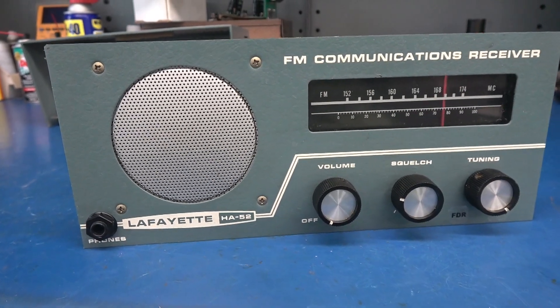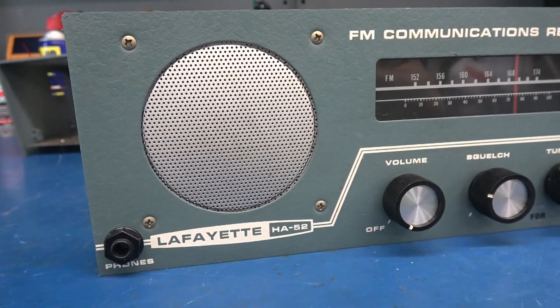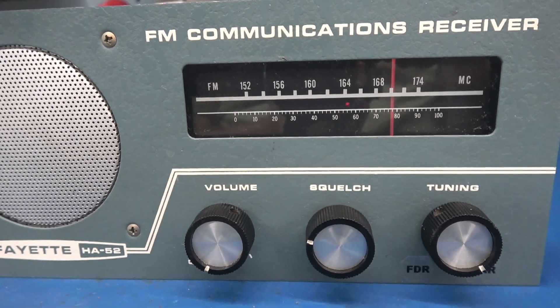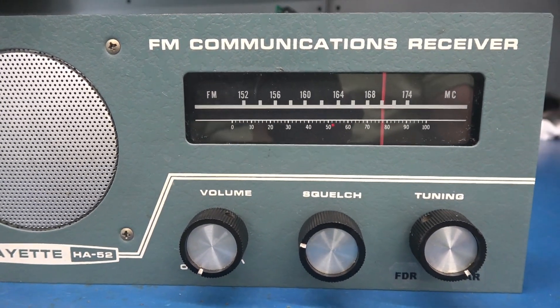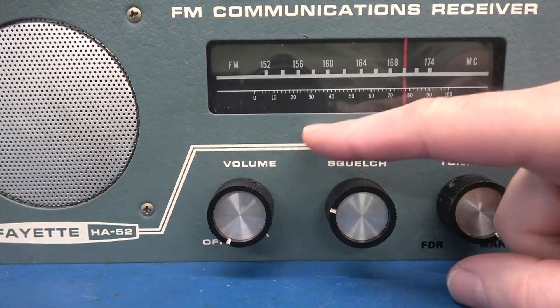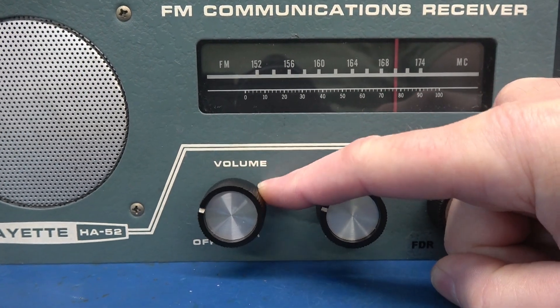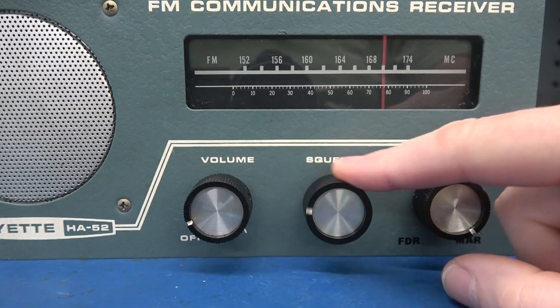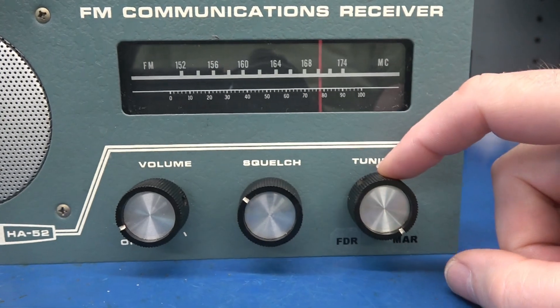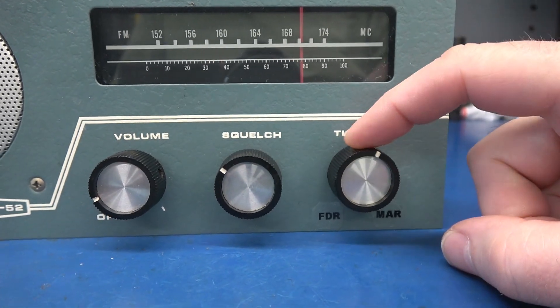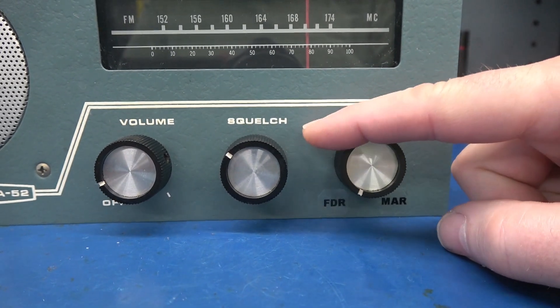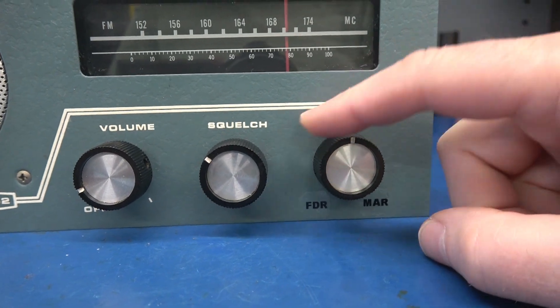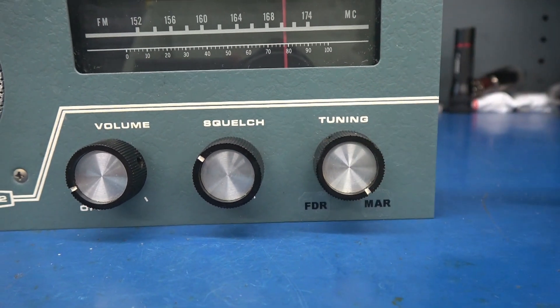The Lafayette HA52 police radio conversion to guitar amp is complete. This is a class A amplifier running a 6V6. My controls: this is still volume with the power switch. Squelch is now tone. And the tuning is the Optiplex control. So all the way over is like a Fender Deluxe. Straight up is like a Champ. And over here is Marshall.